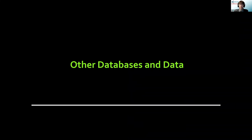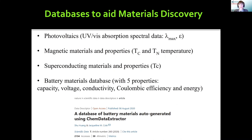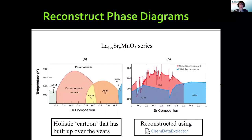That's a real example of successful design-to-device data-driven materials discovery. We've also been making other databases. We've made a magnetic materials database — which also includes superconducting materials since the two are linked — and most recently a battery materials database containing chemicals and five of its most popular properties: capacity, voltage, conductivity, color, efficiency, and energy. They are all open-source databases published in the journal Scientific Data, so you can take them and do your own calculations.